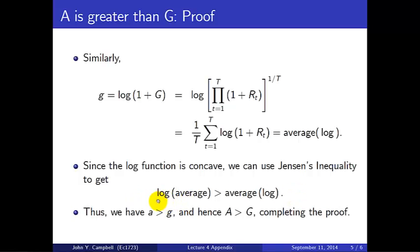So we know using Jensen's inequality for concave functions that the log of the average exceeds the average of the log. That tells us that little a is bigger than little g, and hence big A must be bigger than big G, and that completes the proof.